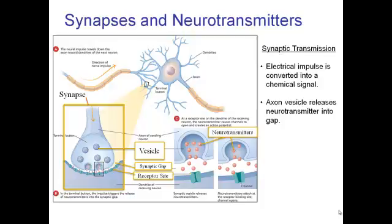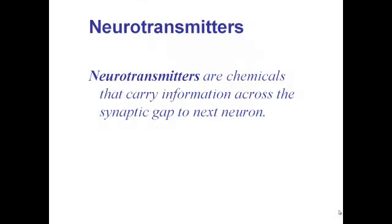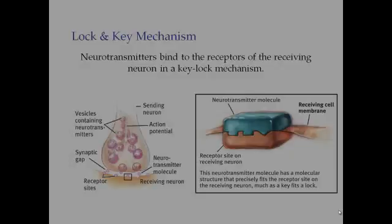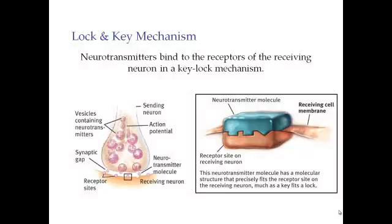The vesicle — the terminal button releases the neurotransmitter into the synaptic gap. The dendrite receptor site detects the neurotransmitter. The chemical and the receptor site are designed to respond to specific kinds of neurotransmitters. It fits like a lock and a key — the neurotransmitter is the key and the receptor site is the lock.